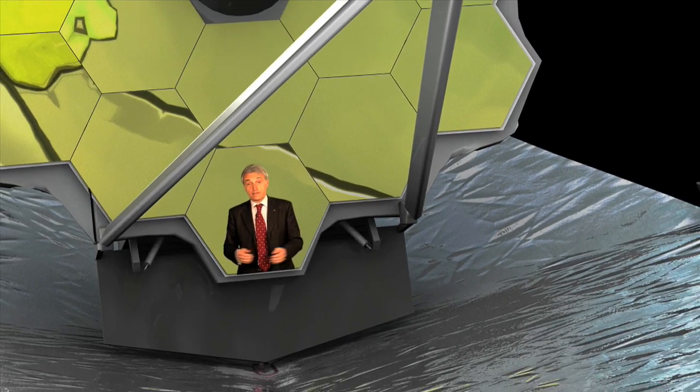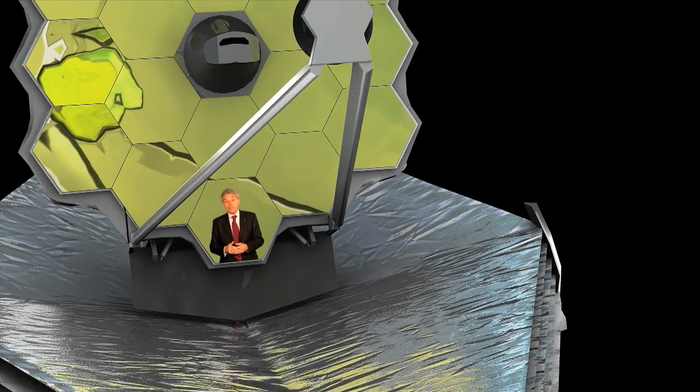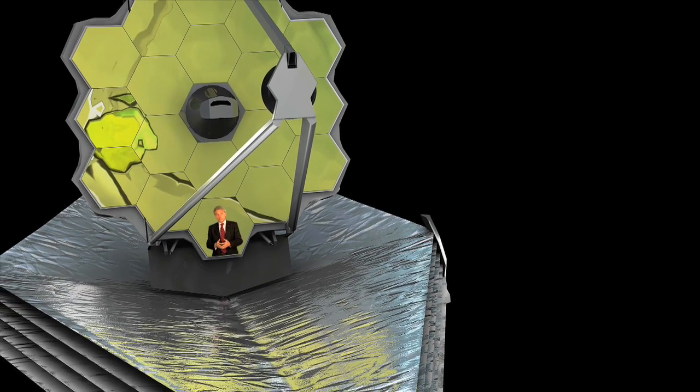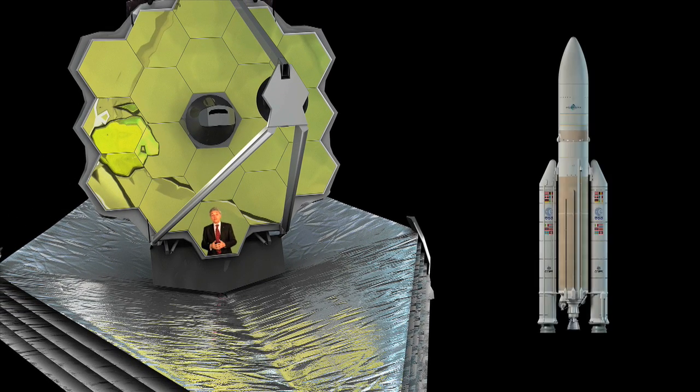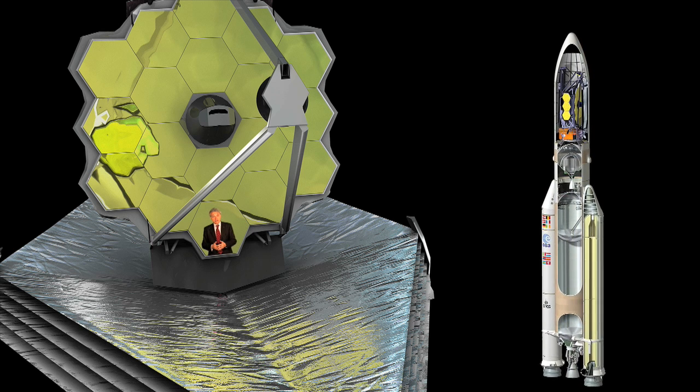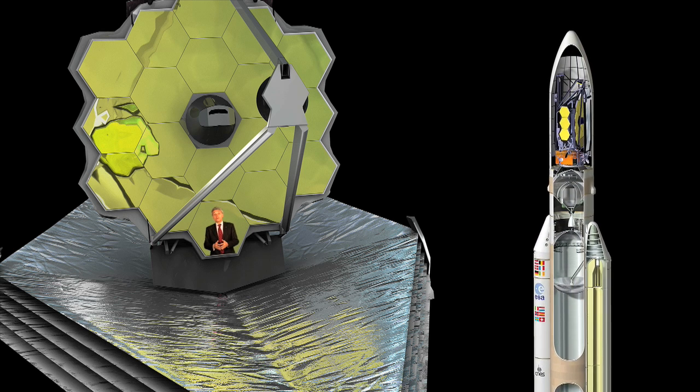When it's launched, the James Webb Space Telescope will be the largest space telescope ever flown, with a primary mirror that is six and a half meters in diameter. In fact, this space telescope mirror is the first to have a diameter larger than that of the launcher fairing, and it will have to be folded to fit into the ESA Ariane 5 ECA launcher.